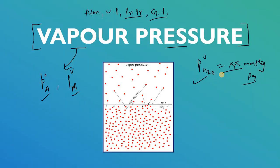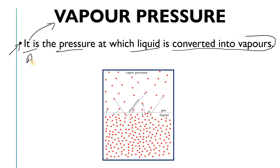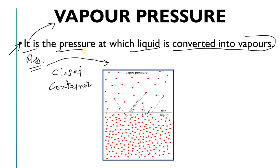Let's start the video. I have written a definition of vapor pressure — we'll come back to it shortly. The definition is: vapor pressure is the pressure at which a liquid is converted into vapors. There is one important assumption: your vessel must be a closed container. Only in a closed container can we talk about vapor pressure. In an open channel or open system, we cannot discuss vapor pressure.